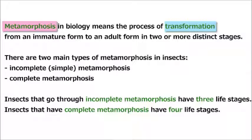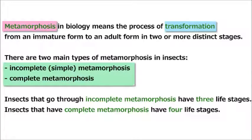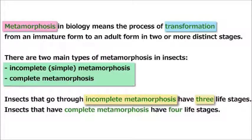There are two main types of metamorphosis in insects: incomplete, simple metamorphosis and complete metamorphosis. Insects that go through incomplete metamorphosis have three life stages. Insects that have complete metamorphosis have four life stages.